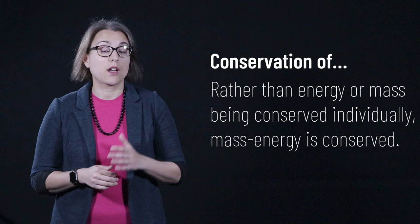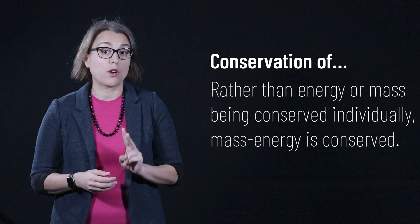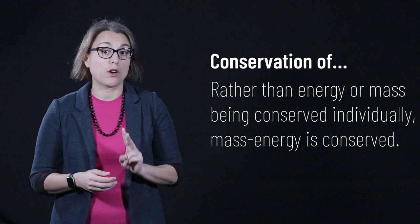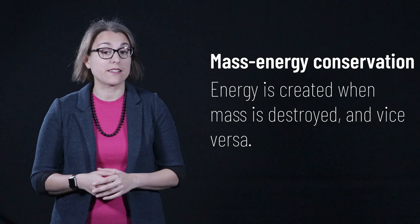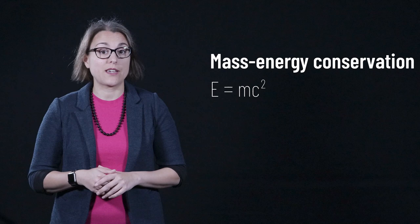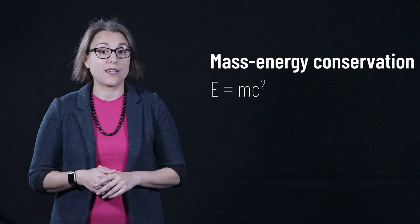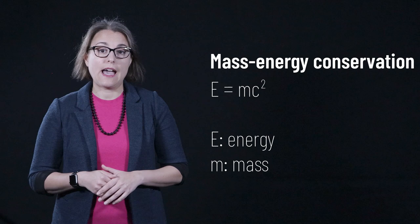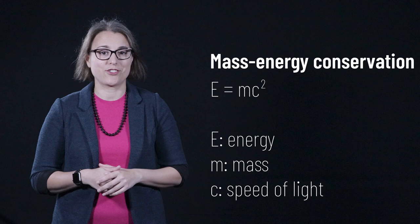While we've talked about conservation of mass and conservation of energy, it turns out that the two are related. It's really more correct to talk about the conservation of mass energy. The energy generated in the fission process comes from the mass that is lost. The amount of energy created can be quantified using the famous equation E equals MC squared. E is the energy, M is the mass of the particles at rest, and C is the speed of light. Because the speed of light is such a large number, even a small mass of particles can create an enormous amount of energy.